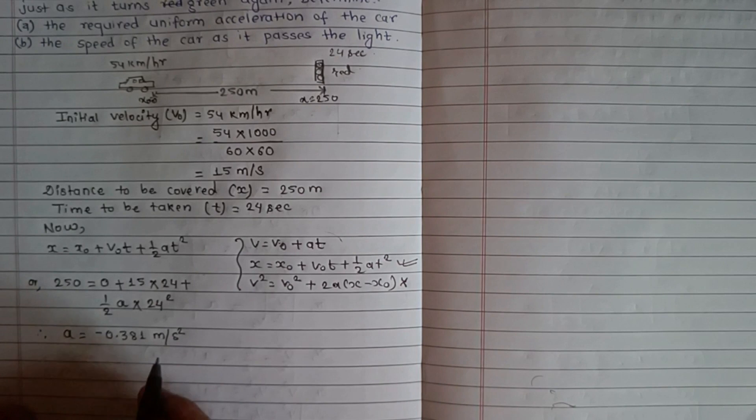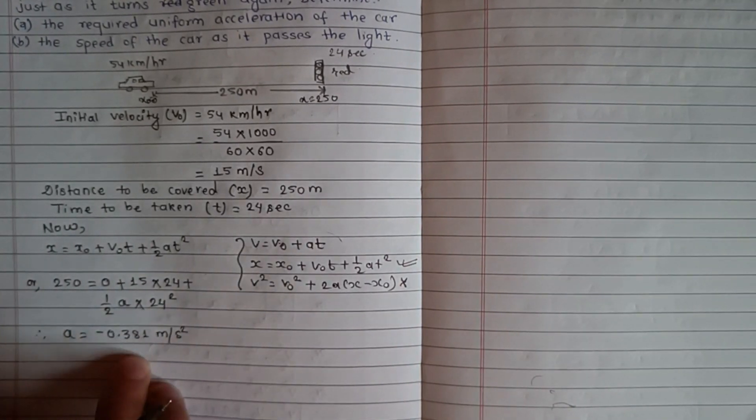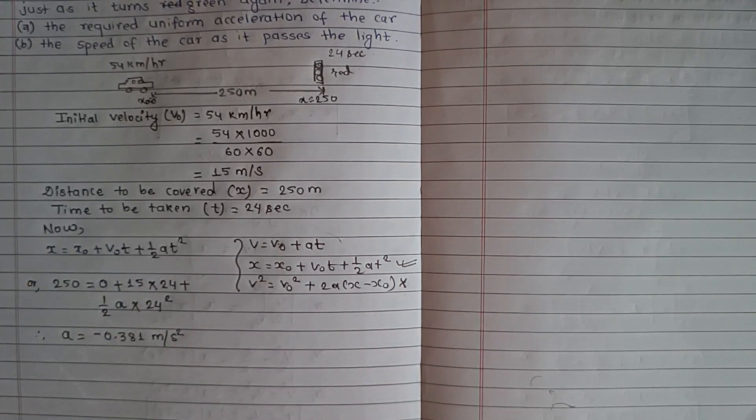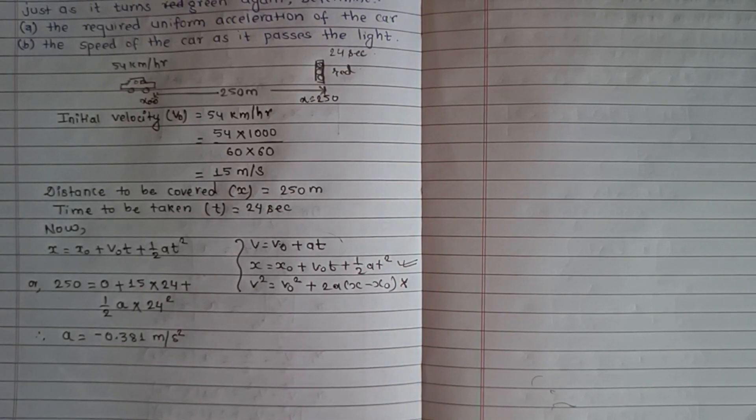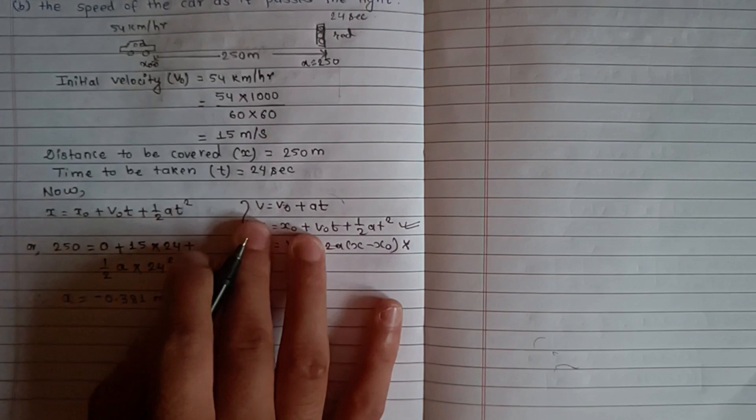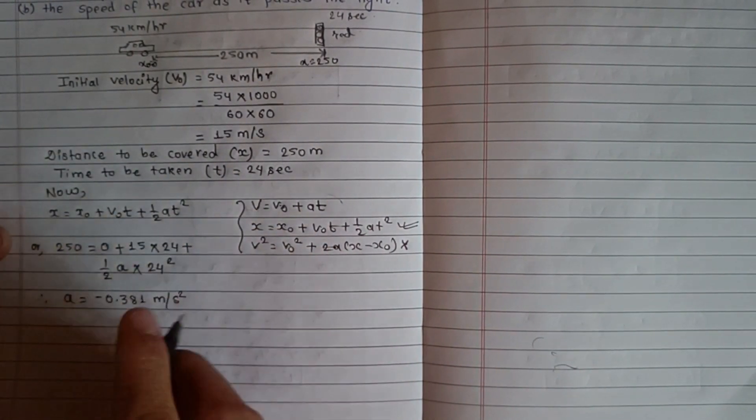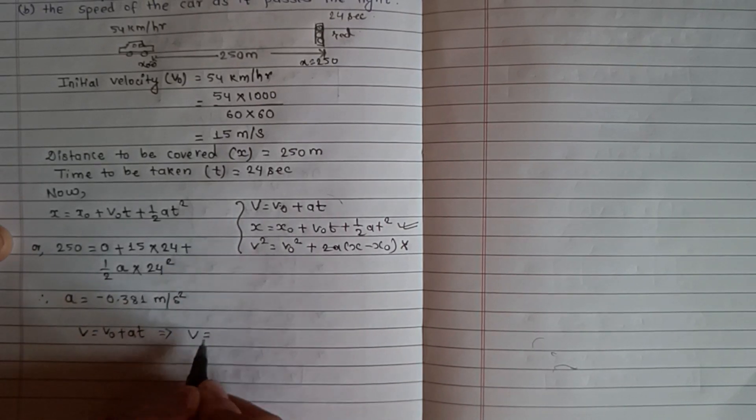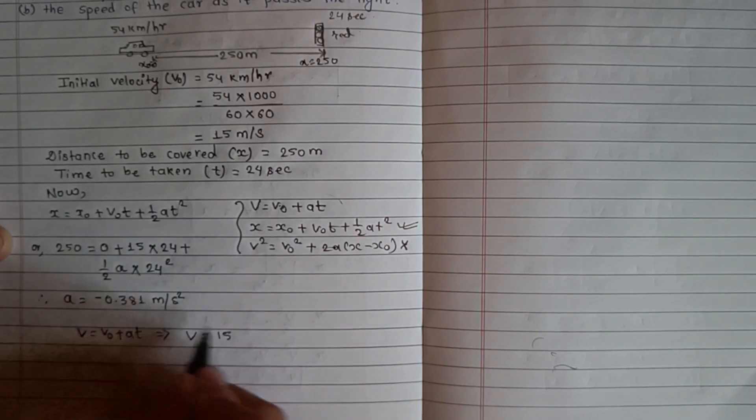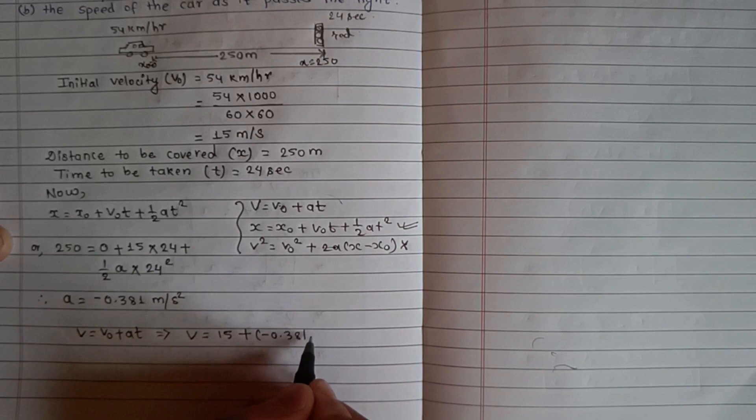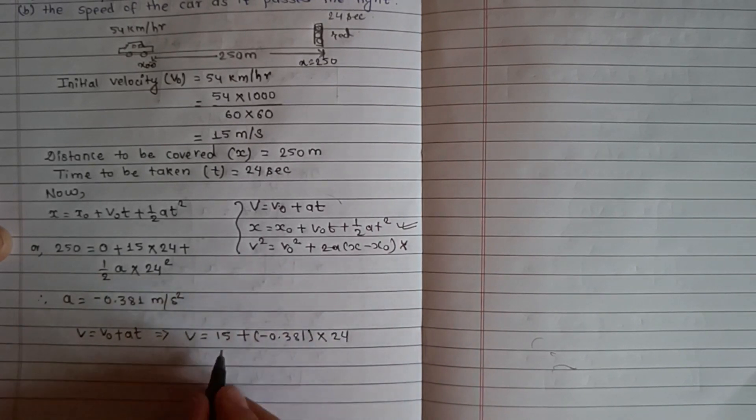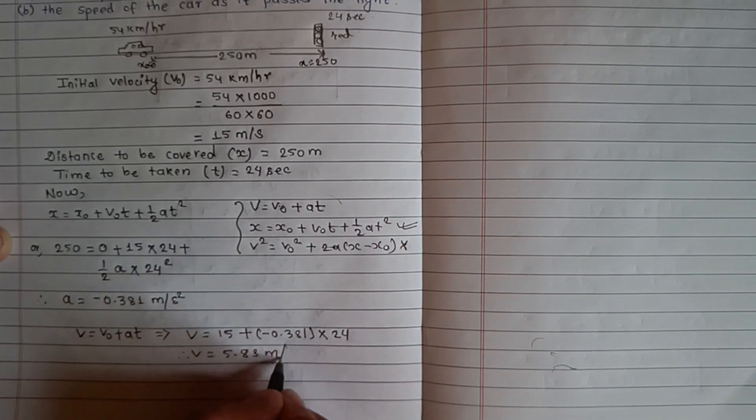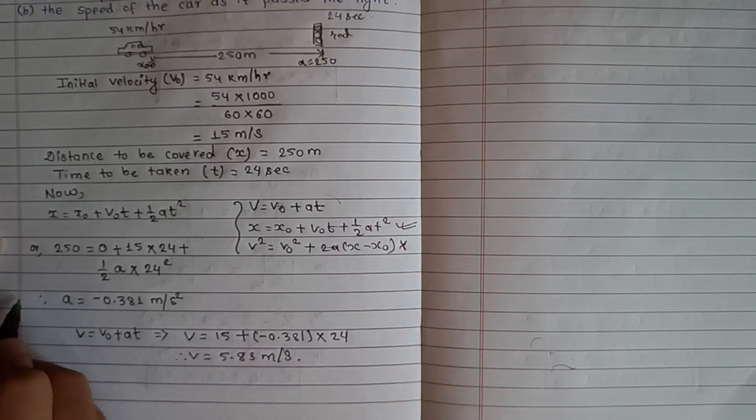For the second part, the speed of the car as it passes the light, we use V equals V not plus AT. Substituting values: V equals 15 plus minus 0.381 times 24, which gives V equals 5.83 meters per second.